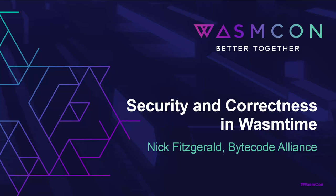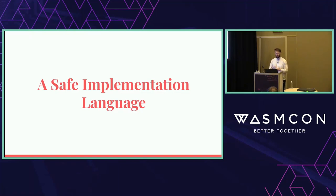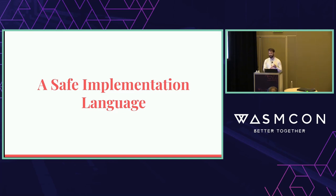For WasmTime, security begins with a safe implementation language. WasmTime is implemented in Rust. Google, Microsoft, and Mozilla have each independently found that about 70% of the security bugs in their web browsers historically were memory safety bugs — things like use-after-free and out-of-bounds heap accesses. And it turns out that this is exactly the class of bugs that Rust helps us avoid.